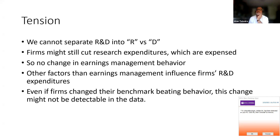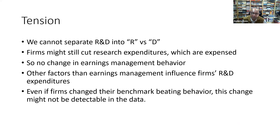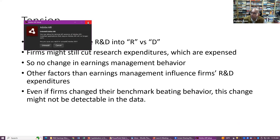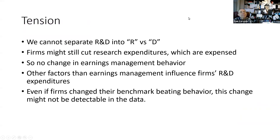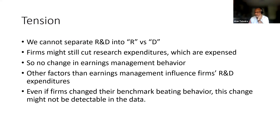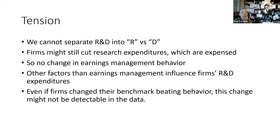Sudipta asks about the amortization of development expenditures: what period is it amortized over, how does it affect income, and does it flow through R&D or through amortization? Paul says unfortunately they couldn't get that number. Presumably firms could lengthen the amortization schedule, but they were not able to determine that. Alan points out that R&D is just one aggregate number in IFRS — they don't actually separate current expenditure from the amortization component. It's just one disclosed number.